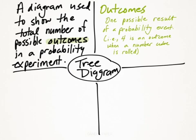Outcomes are just one possible result of a probability event. So if you had a dice and you rolled it, if you rolled a 4, that's just a possible outcome.